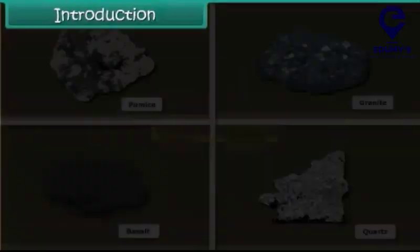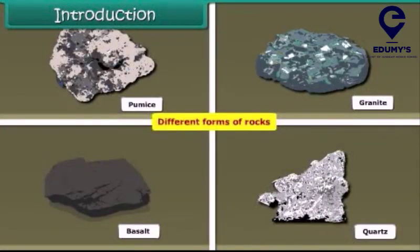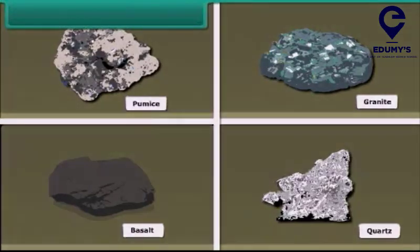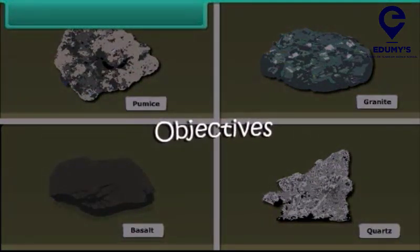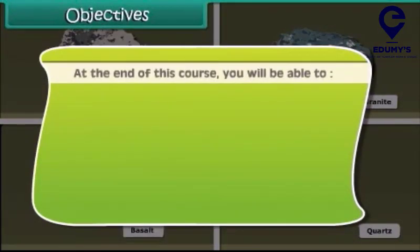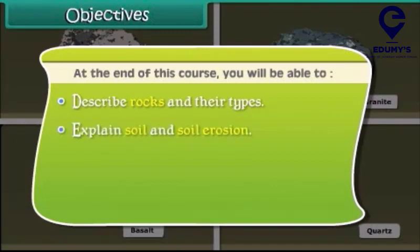There are different forms of rocks. Let us discuss about different kinds of rocks. Objectives: at the end of this course, you will be able to describe rocks and their types, explain soil and soil erosion, and discuss about minerals.